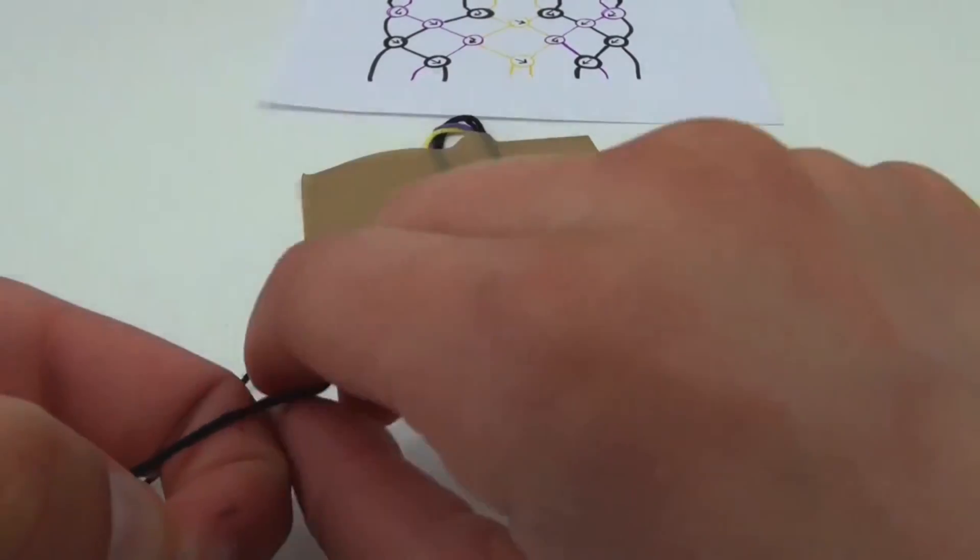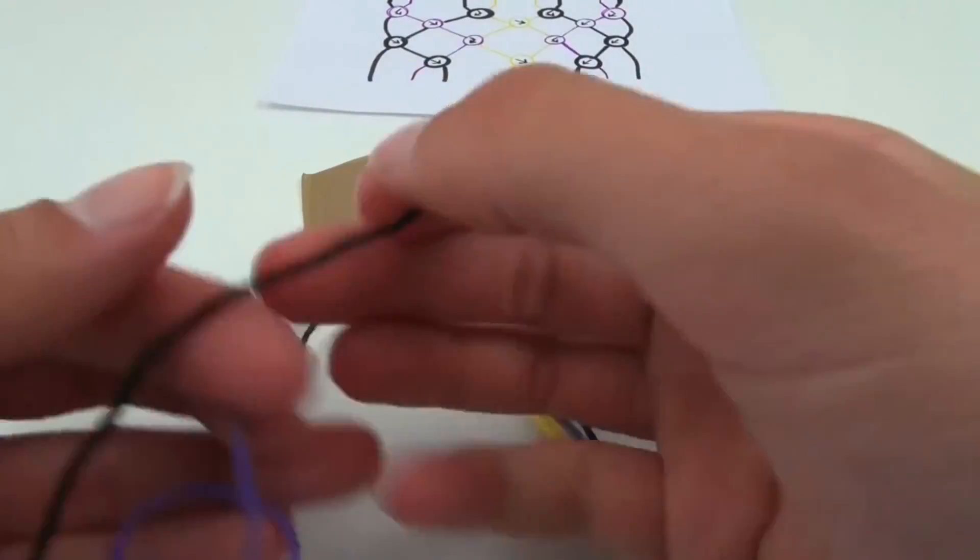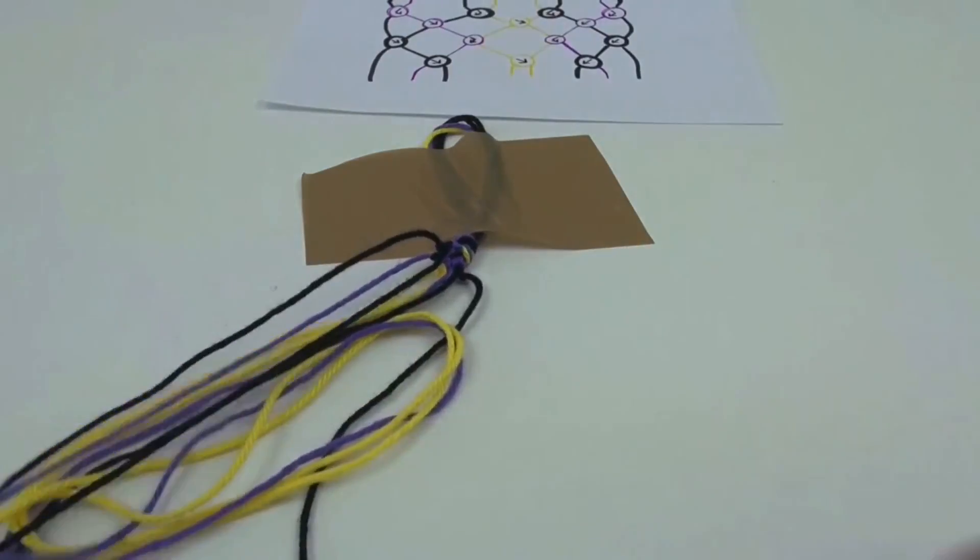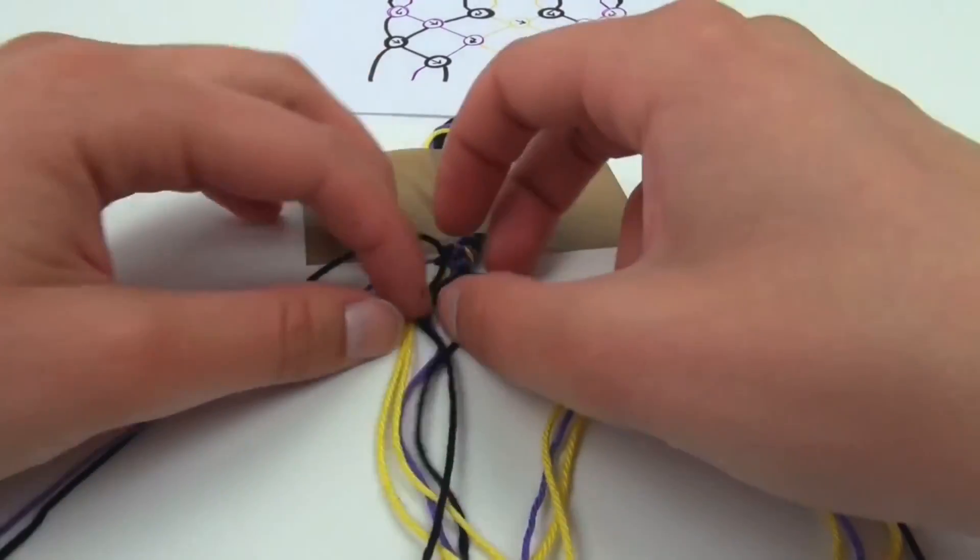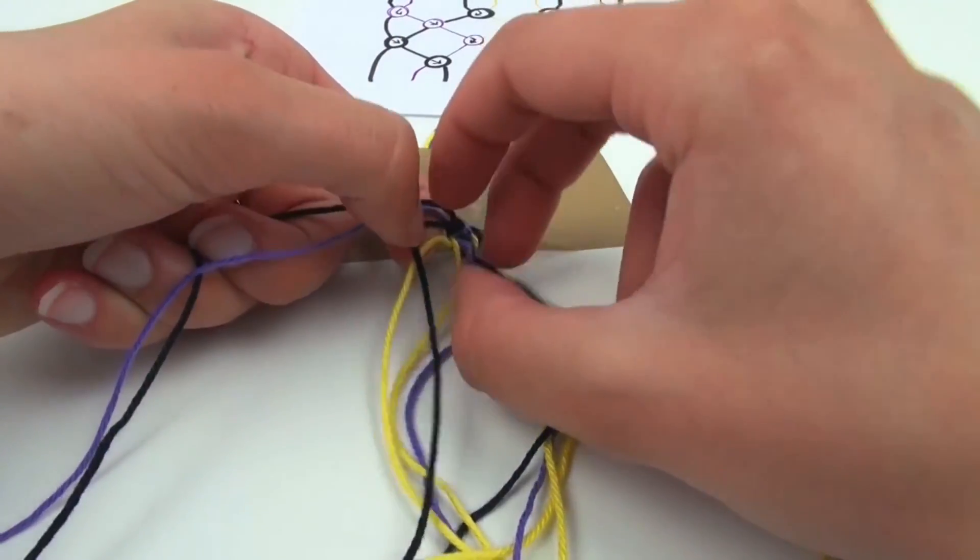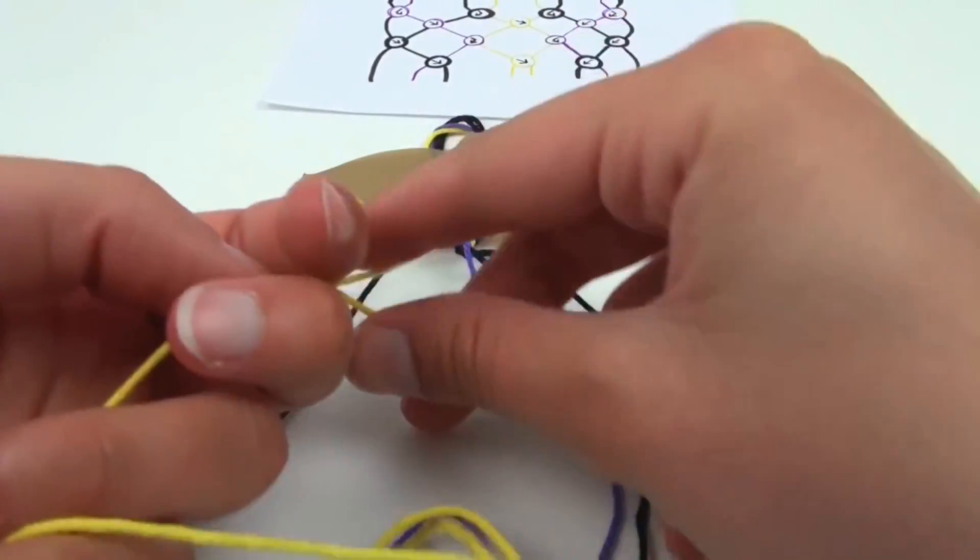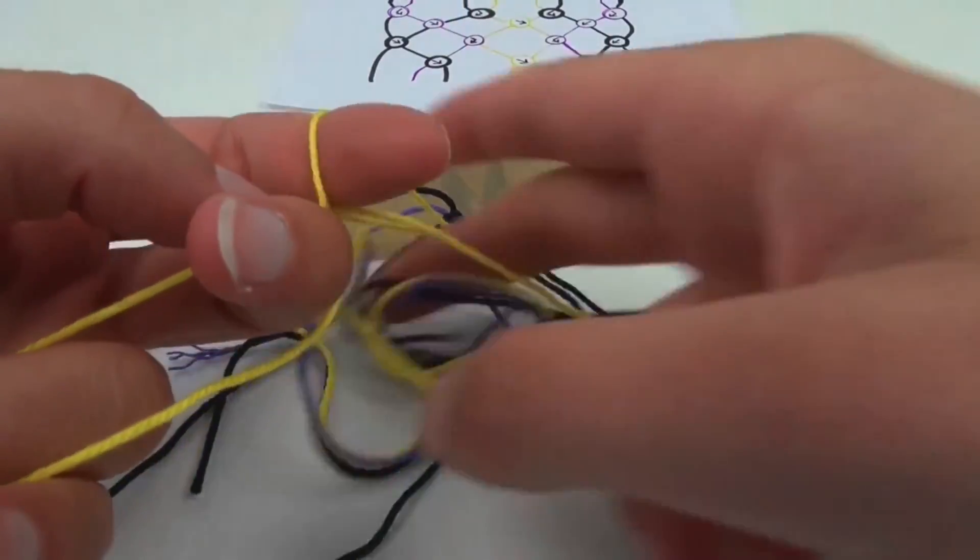Then the black one with the purple one next to it, towards the left and then towards the right. Then yellow with yellow, towards the left and then towards the right, so it's a standard knot.